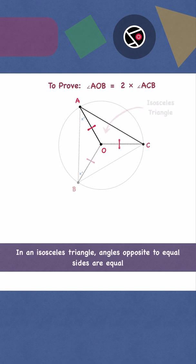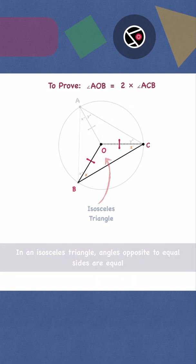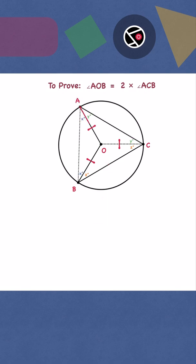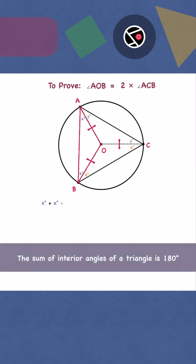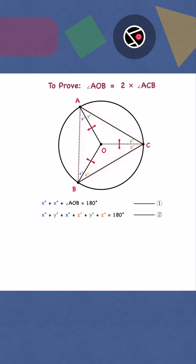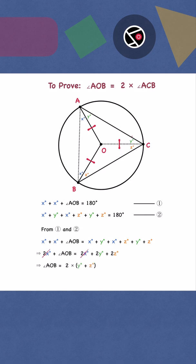Similarly, for triangle AOB and for triangle ACB, clearly from steps 1 and 2, y plus z equals angle ACB. Therefore, angle AOB is two times angle ACB. We are done.